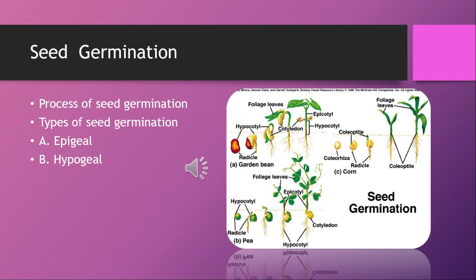The radicle grows down into the soil and develops into the total root system. The plumule grows upward into air and develops into the shoot of the young plant. Initially, food is stored in the cotyledon or endosperm. Either the cotyledon forms the first leaves of the seedling, or new leaves are developed from the plumule to manufacture food for the seedling.